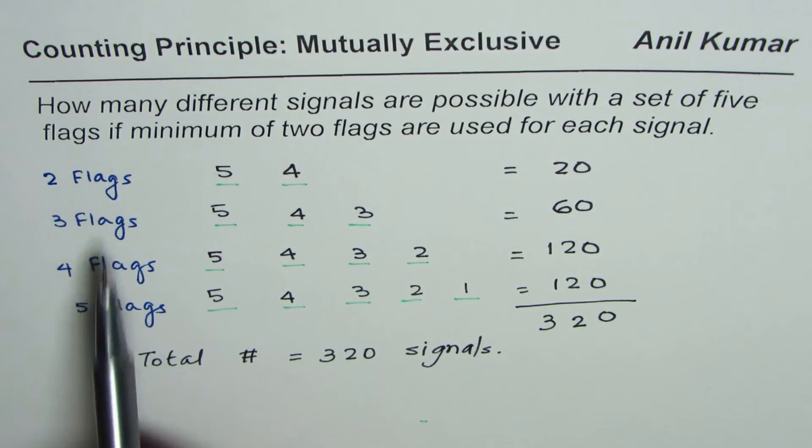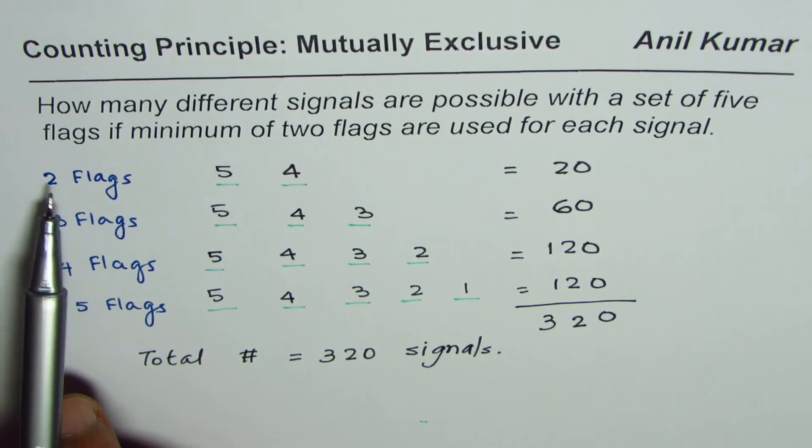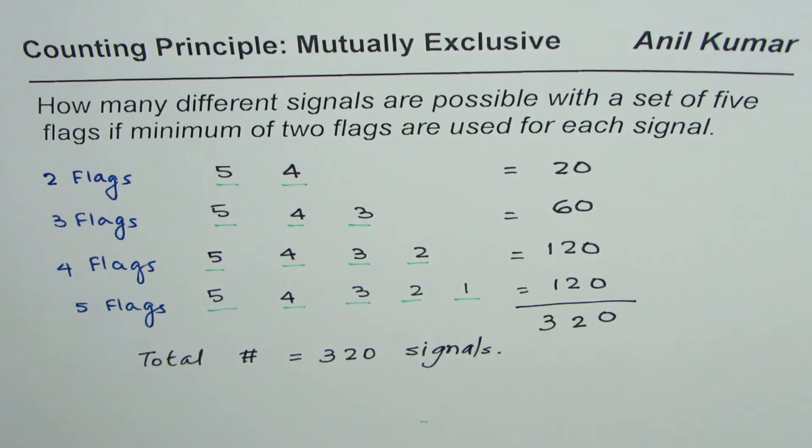Remember, here these are mutually exclusive cases. That is, if you are selecting two flags, you are not selecting three flags, and therefore they could all be added. So we have applied the additive counting principle, or rule of sum, in this particular situation to get the answer. I hope that is clear. Thank you and all the best.